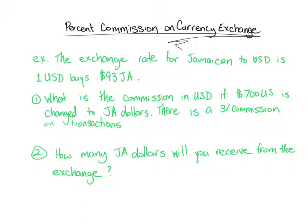In this video we'll be looking at how to do a currency exchange calculation if you have to pay a commission to the bank. A commission is a percentage that the bank charges in order to carry out the transaction. In this case the bank is charging 3% commission on each transaction and we want to exchange 700 US dollars.